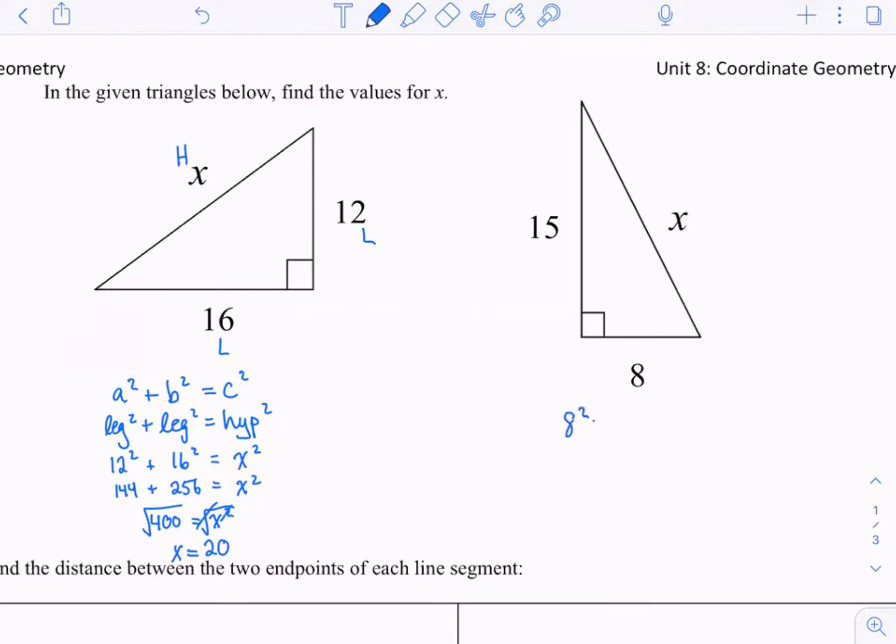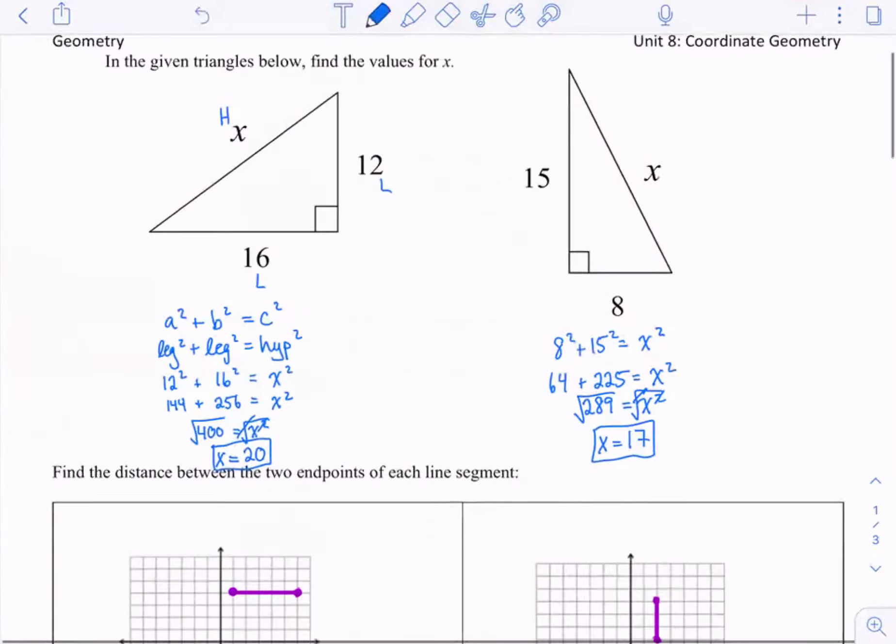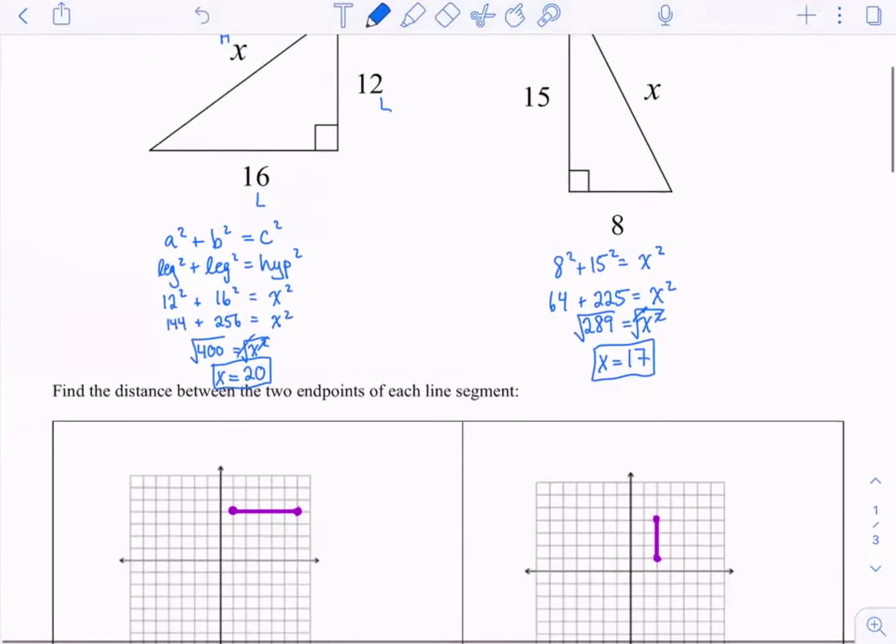I could do it again here. 8 squared is 64. 15 squared is 225. So when I do 225 plus 64 I get 289 and then the square root of 289 is 17. Wow, I'm really tripping over my own words today. So here we get x equals 17. So the Pythagorean theorem is going to help us here with the distance between two points. So keep that on the back burner for a quick second while we start looking here.